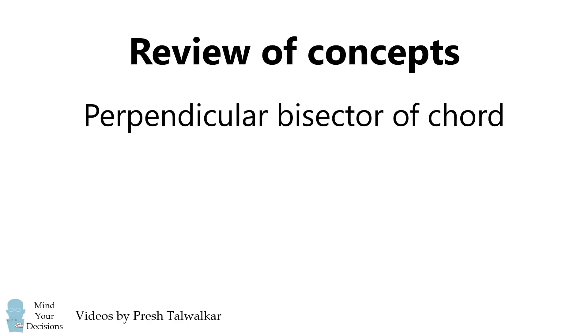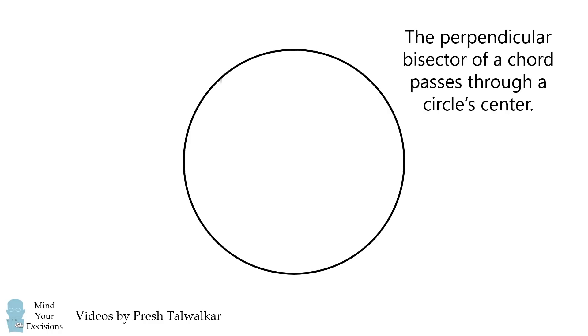Let's first review some concepts. We'll go over the perpendicular bisector of a chord and the centers of tangent circles. Suppose we have a circle with a chord AB. Let's construct the perpendicular bisector L. It'll be perpendicular and it'll bisect AB. Every single point on L will be equidistant from A and B. This will also be true for the center of the circle because the center has the same distance to points A and B. Therefore, the perpendicular bisector of a chord passes through a circle center.